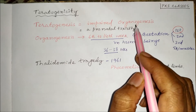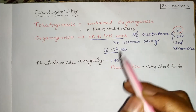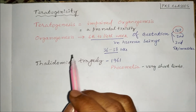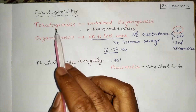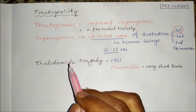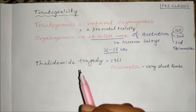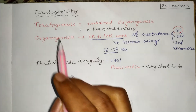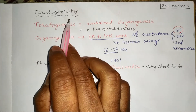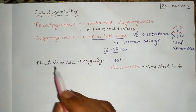During this period, if a drug is taken and it inhibits the organogenesis process in the fetus, we call it teratogenesis. The drugs that cause this are called teratogenic drugs, and the process is called teratogenicity.